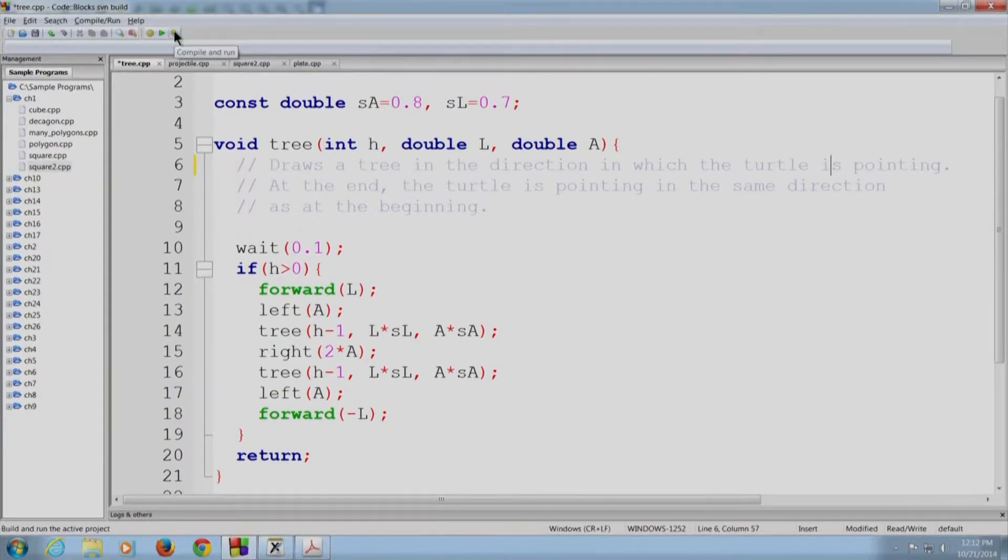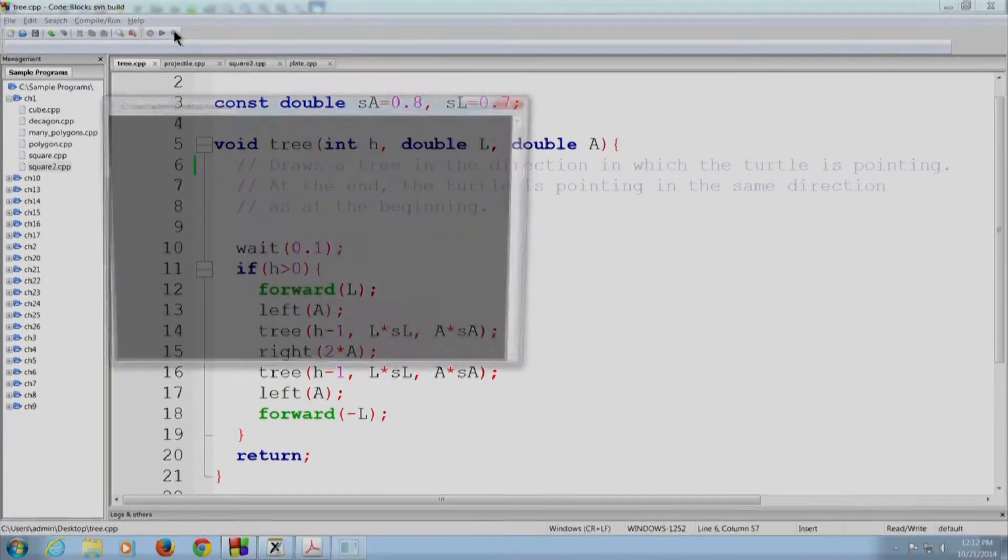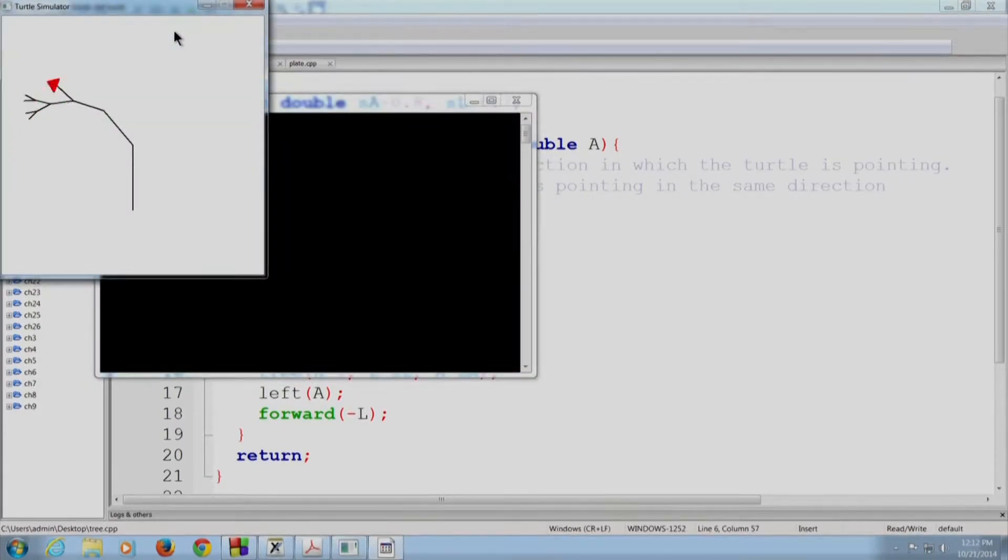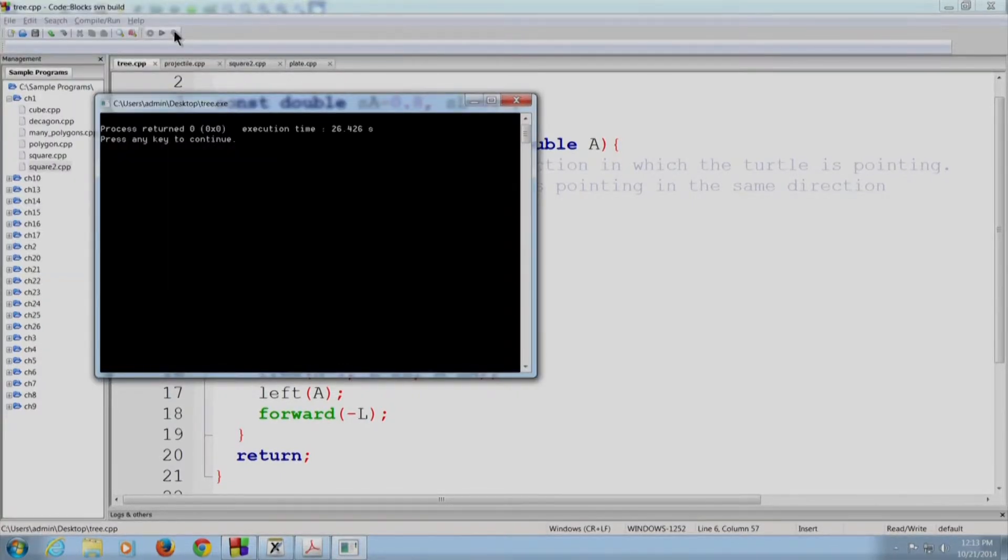As you can see, the turtle is drawing the left side first because the left recursive call has been made first. As you can see, the invariant was satisfied. The turtle came back to the root and it also was pointing in the vertical direction. All right.